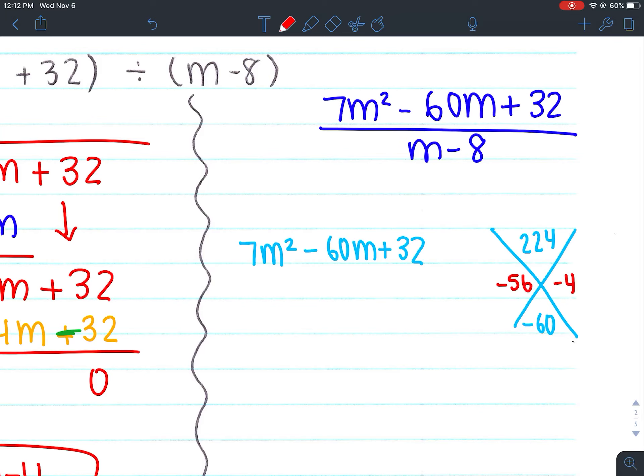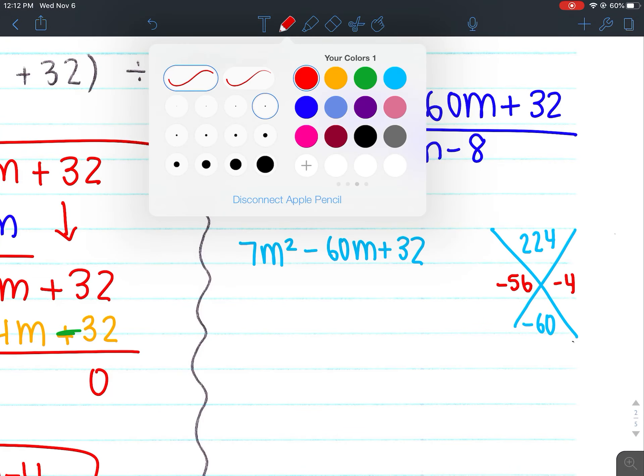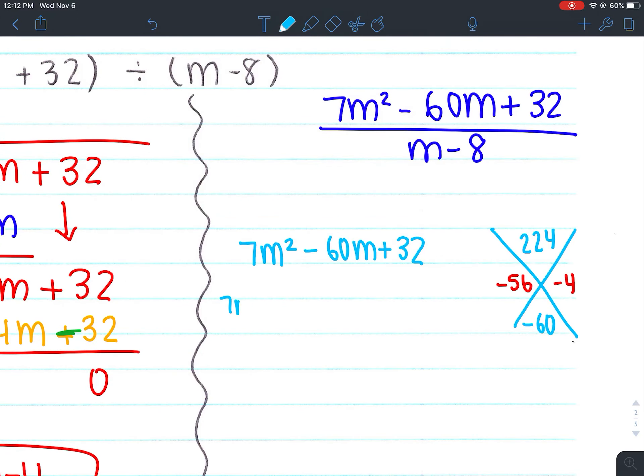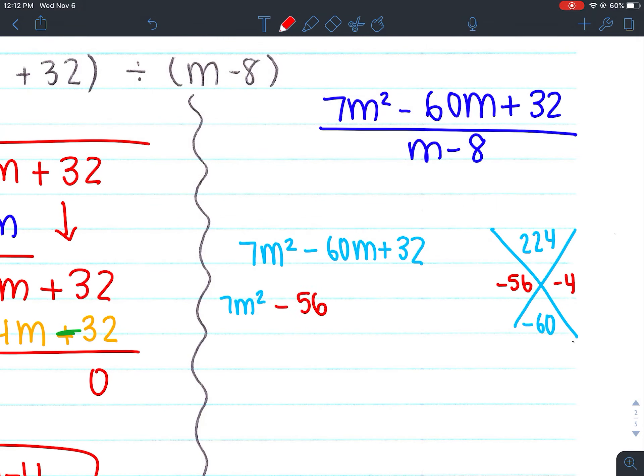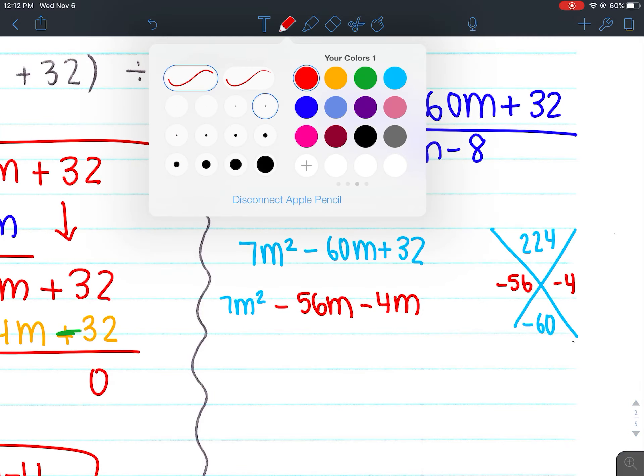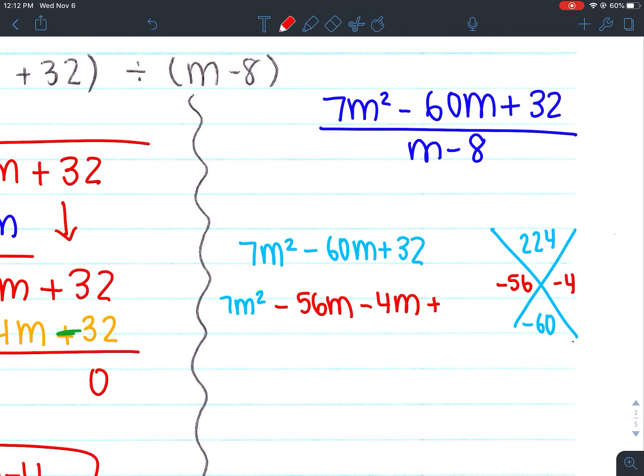-56 times -4 gives me positive 224. And -56 plus -4 gives me -60. So that works out. Remember, the whole point of doing the AC method is to make it four terms. Okay. Now we can factor by grouping.